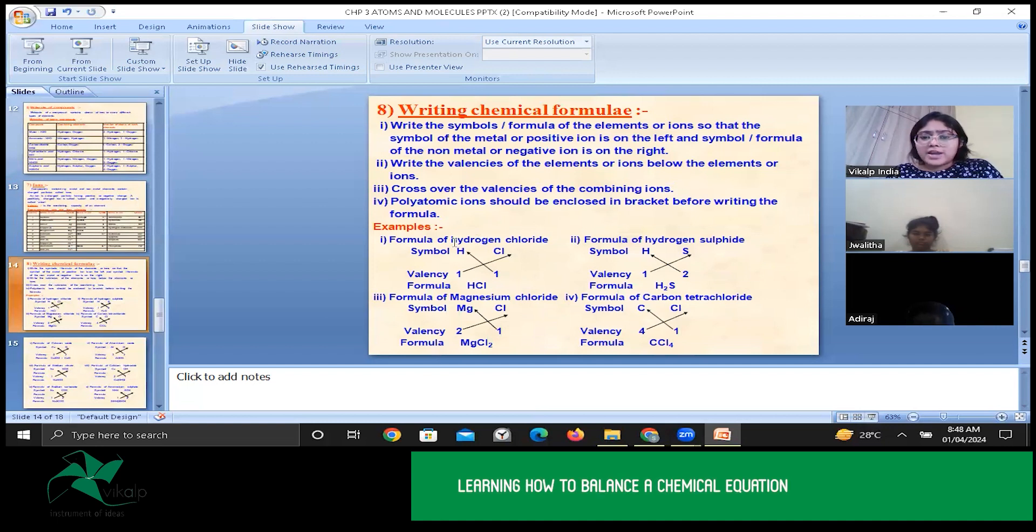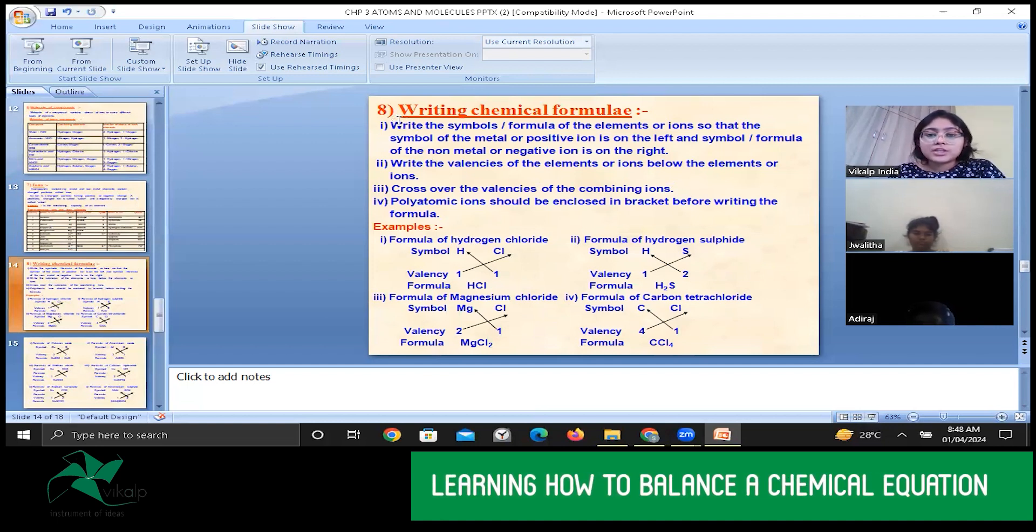3. Formula of hydrogen fluoride. First, we will read the importance of how to write. Write the symbols or formula of the elements or ions so that the symbol of the metal or a positive ion is on the left and the symbol or the formula of the non-metals or negative ions is on the right.